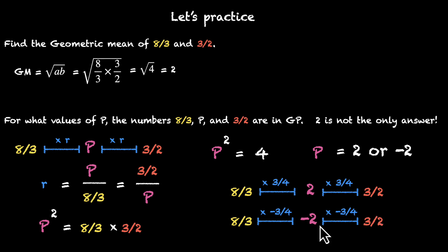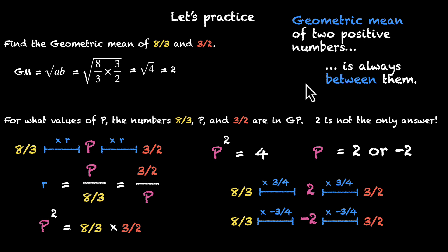So here are two different ways to jump from 8/3 to 3/2 while ensuring that you form a GP. So what we have learned is there are two ways to plug in a number between two numbers so that we get a GP. But only one of them can be called the geometric mean of these two numbers. If I have to put this in different words, I would say that the geometric mean of two positive numbers is always between them.